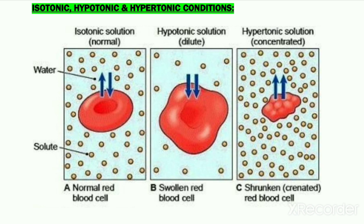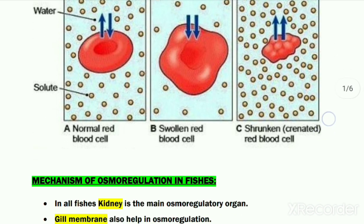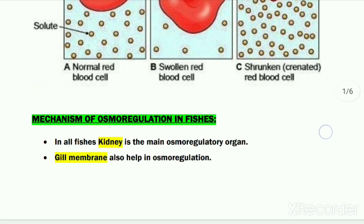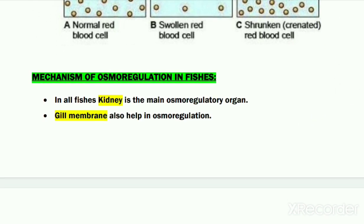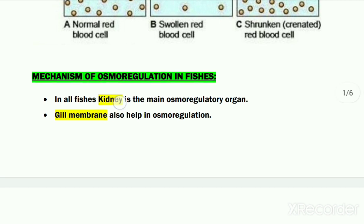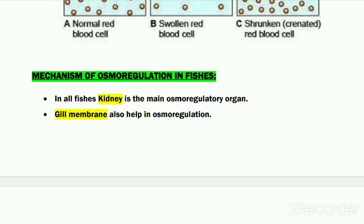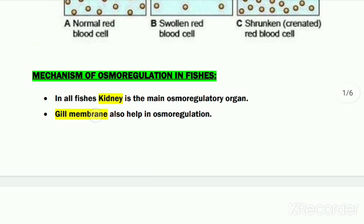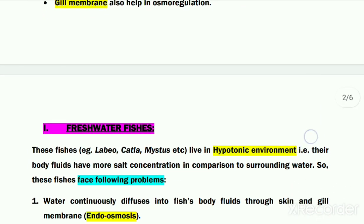Keeping in mind these basic concepts of isotonic, hypotonic, and hypertonic conditions, let us start our main topic — osmoregulation in fishes. The main osmoregulatory organ in all fishes is the kidney, but apart from the kidney, the gills or gill membrane also help in the process of osmoregulation.